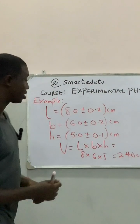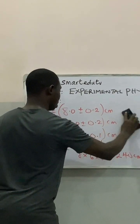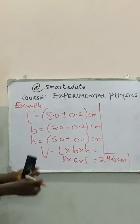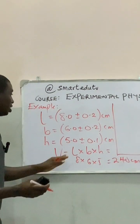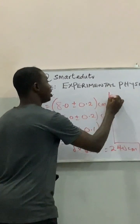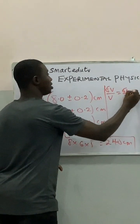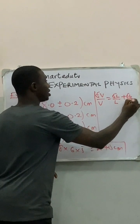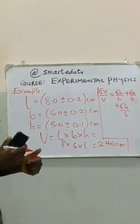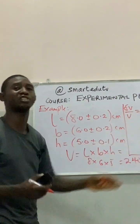So I am also required to calculate the error associated with these values. From V equals length times breadth times height, since this is in terms of product or multiplication, to calculate the maximum error in the volume, the error in V over the actual value of V equals the error in length over the actual value of length, plus the error in breadth over the actual value of breadth, plus the error in height over the actual value of height. This is how we evaluate maximum error — simply because they are multiplications. Anytime we have multiplication or division, we use this format for the maximum error.